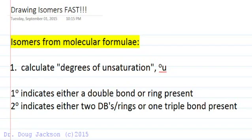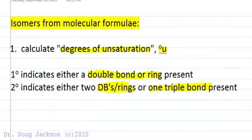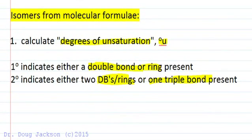One of the things we can do when we're trying to draw isomers from a molecular formula is the first thing we can do is calculate the degrees of unsaturation. A degree of unsaturation is either a double bond or a ring, and if we calculate two or more that means some combination of double bonds and rings, or if it's two it could be one triple bond that's present. The degrees of unsaturation just refer to the absence of a couple of hydrogens in your molecule indicating multiple bonds and closures of rings.